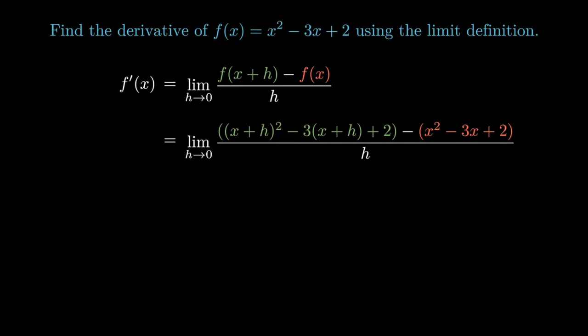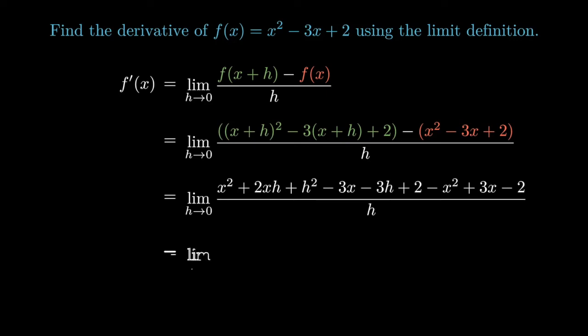We can expand and simplify this limit. What remains in the numerator after simplification are solely multiples of h. So by factoring out the h, we can rewrite this limit as the limit of a polynomial and evaluate at h = 0. So f'(x) = 2x - 3.